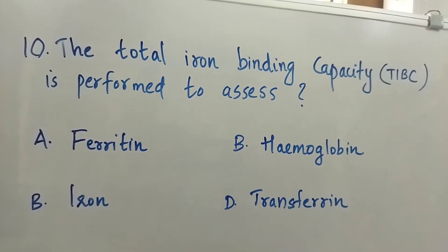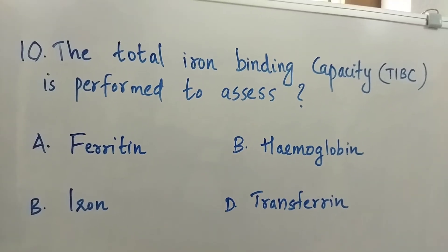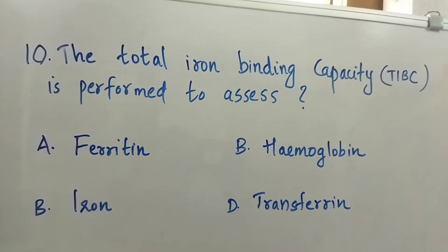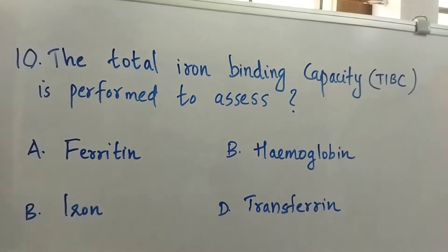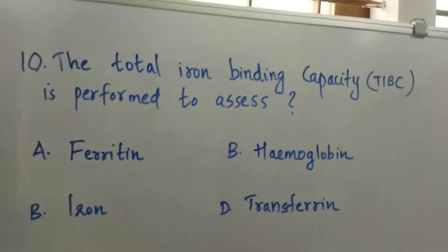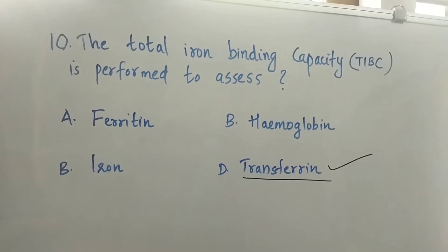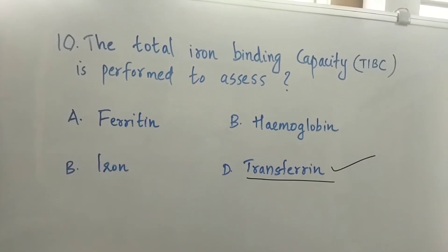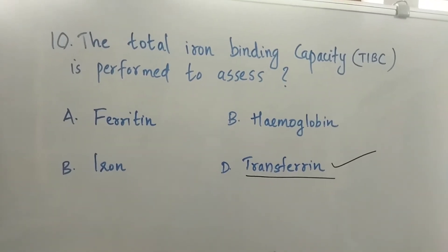Question number 10: The total iron binding capacity (TIBC) is performed to assess — Option A: Ferritin. Option B: Hemoglobin. Option C: Iron. Option D: Transferrin. The right answer is Option D, Transferrin. TIBC is performed to assess transferrin.